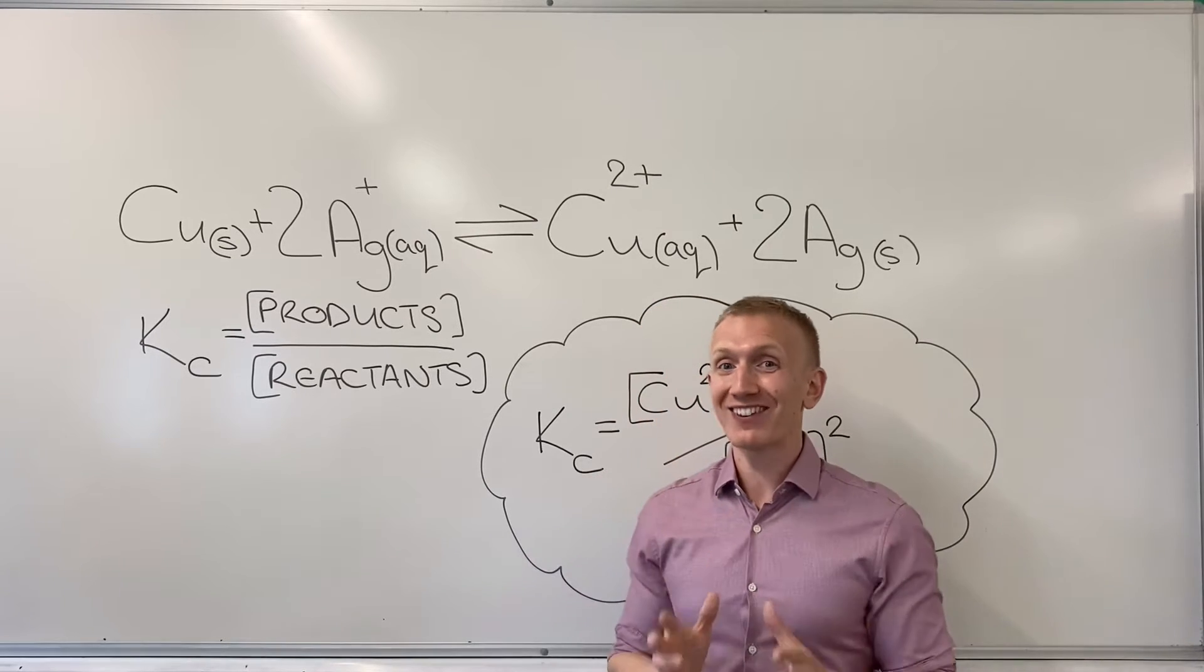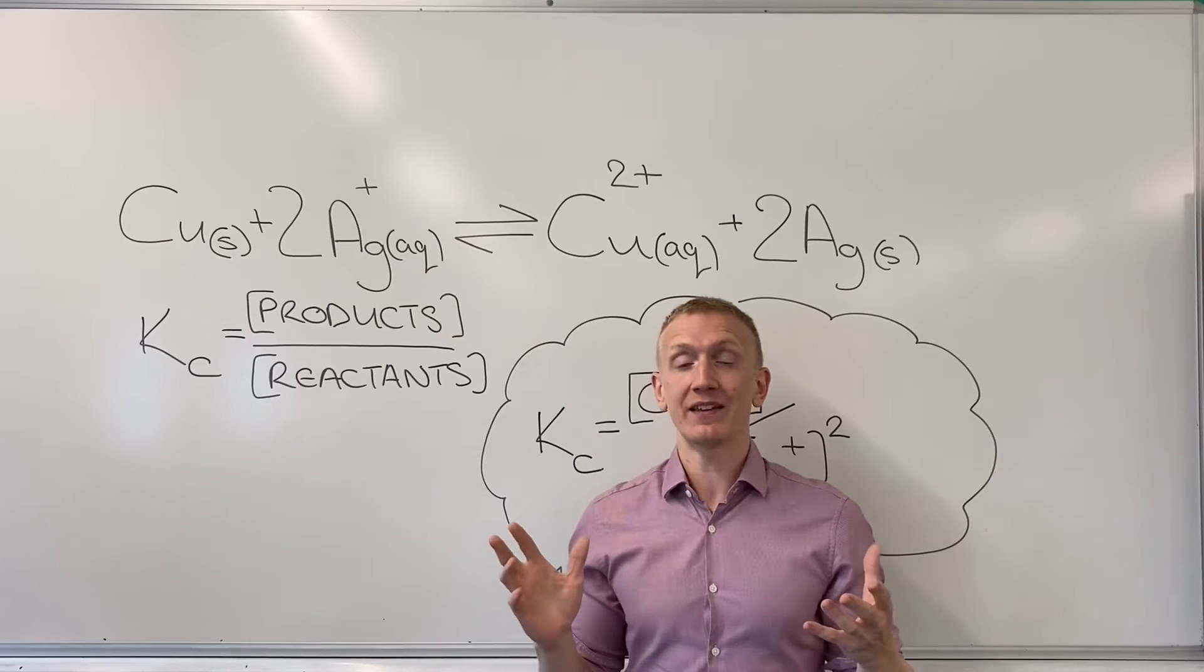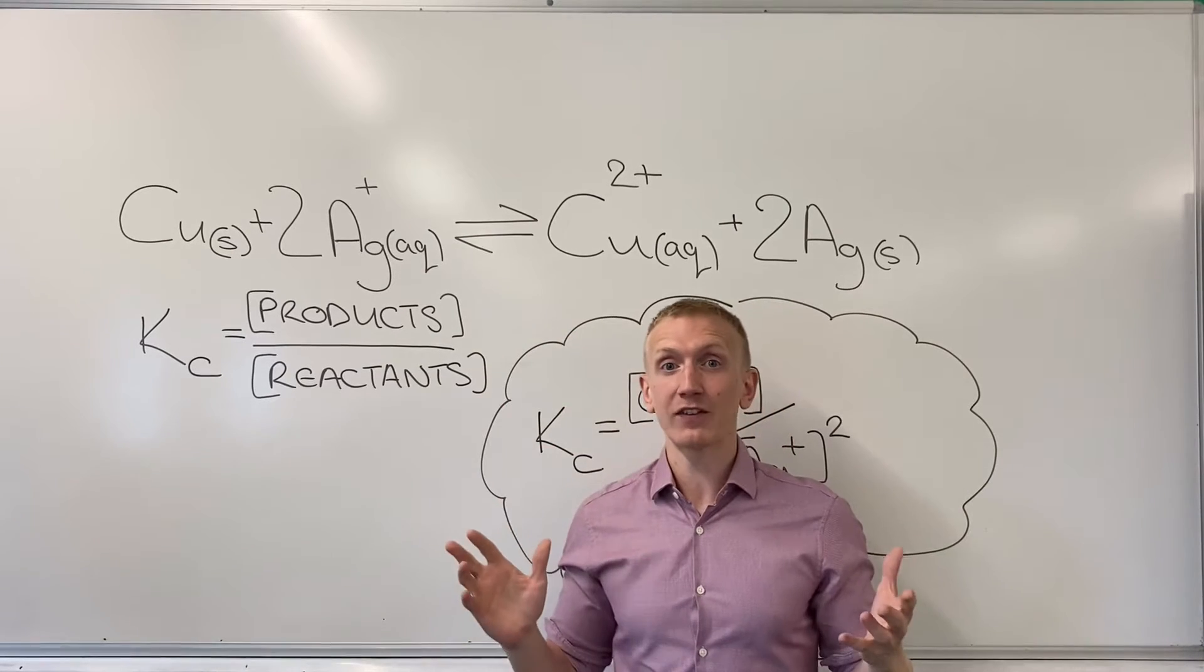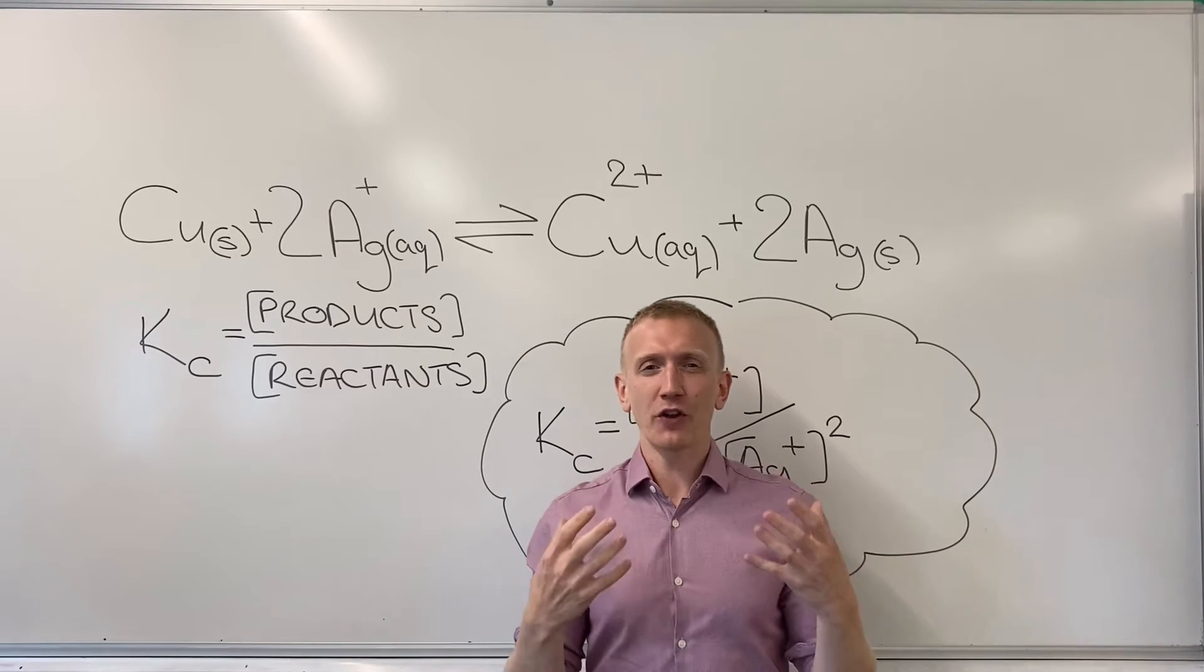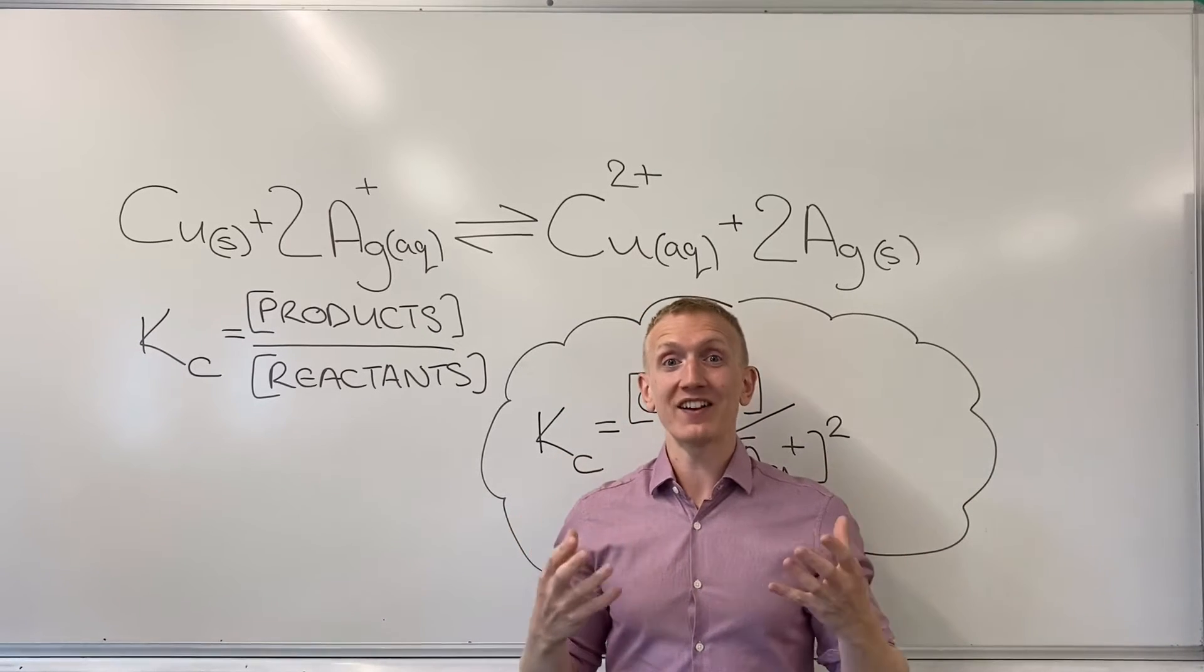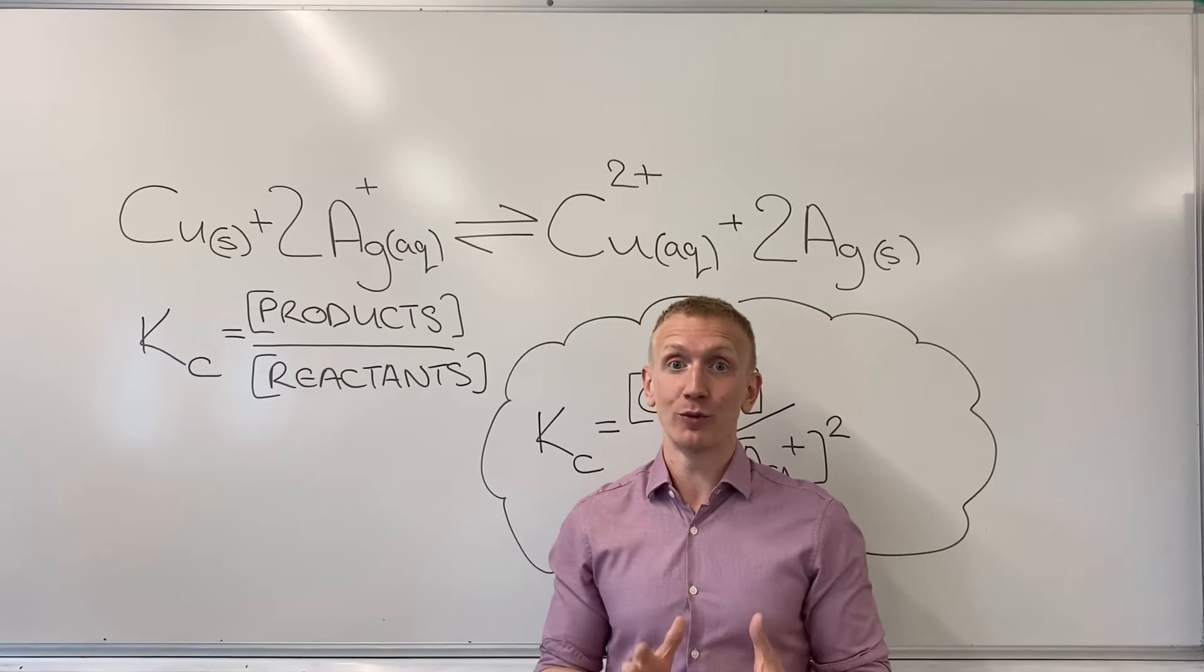But when you've got a heterogeneous equilibrium which has got a combination of lots of different state symbols or even just a few like this one, any solids and any liquids leave them out. And it's because their concentrations are so high, they're actually considered constant and they would influence the KC calculation too much.